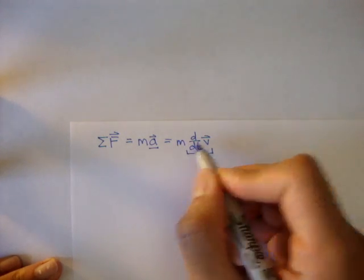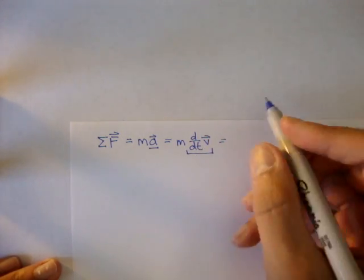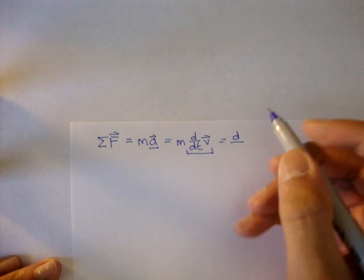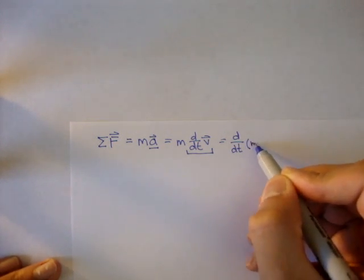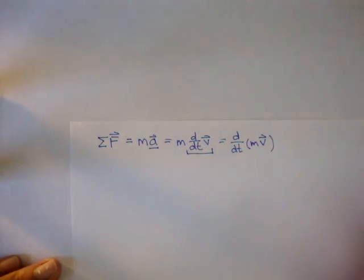And m is a constant, so we can take the d/dt operator out, and we can say sum of all the forces equal to the derivative in respect to time of the mass times the velocity vector.